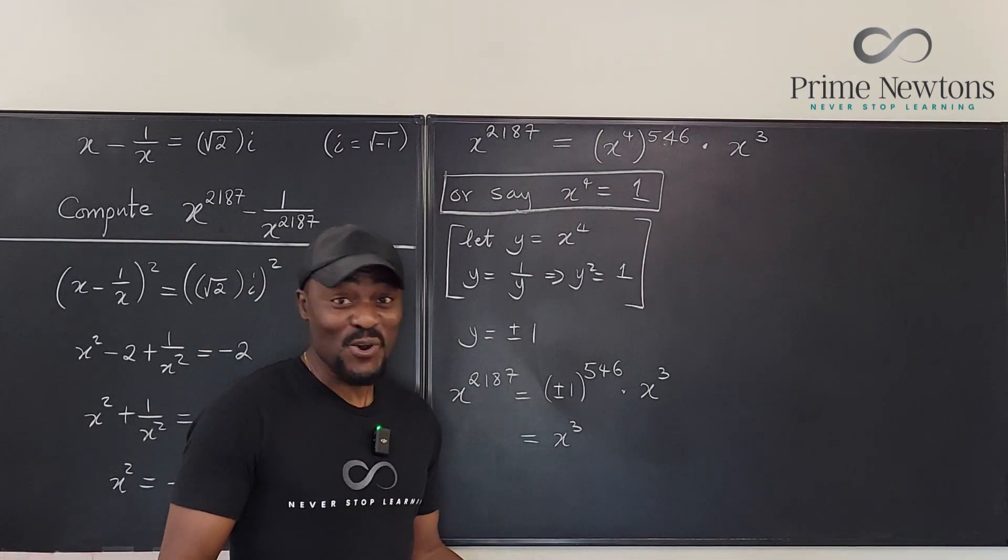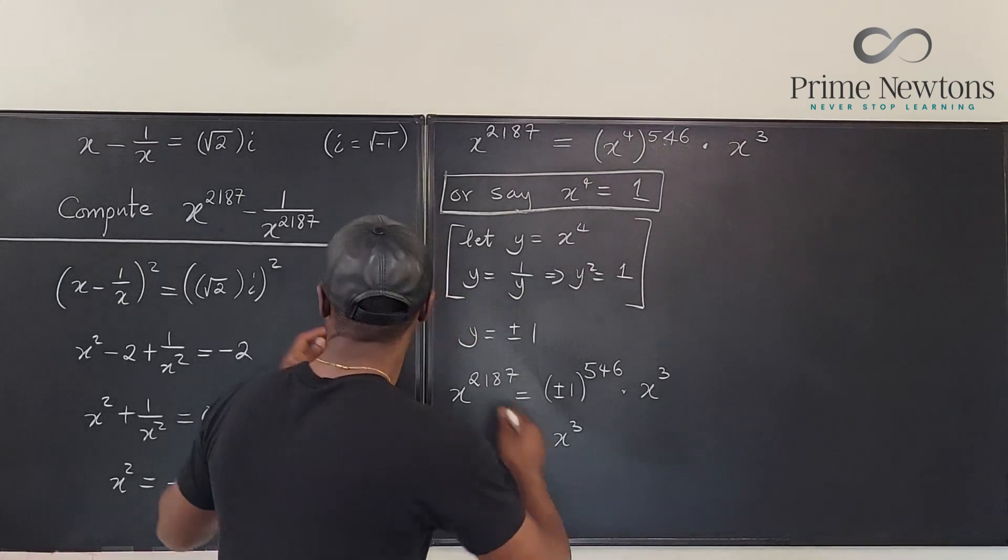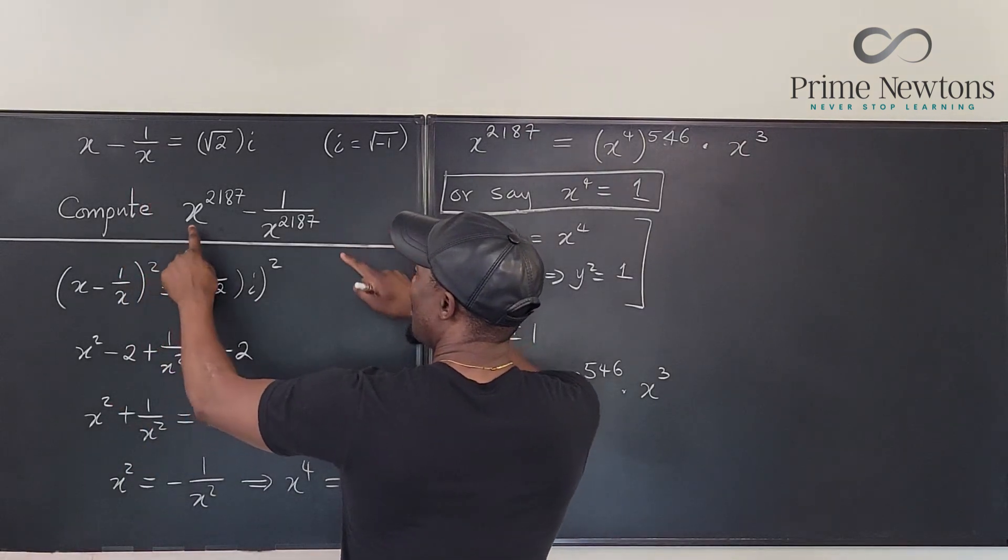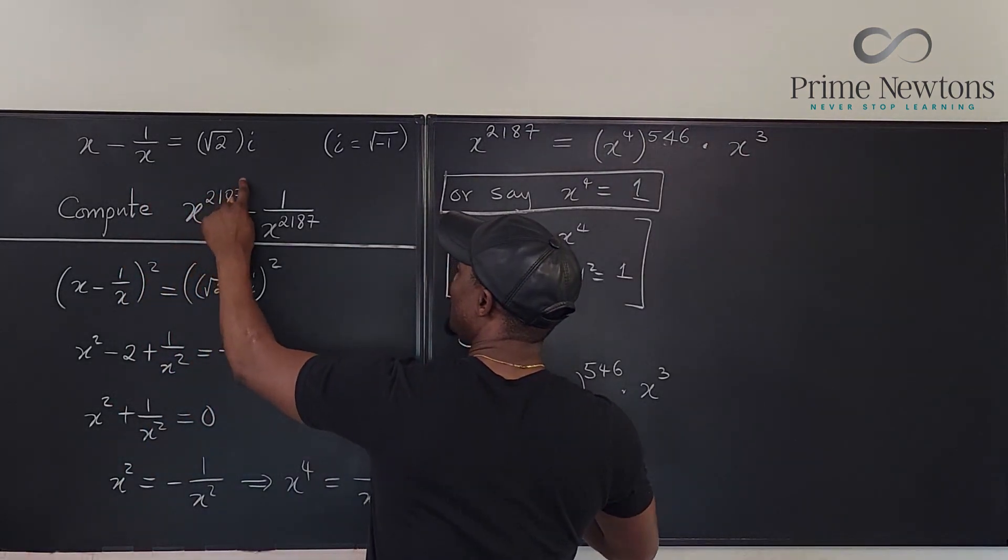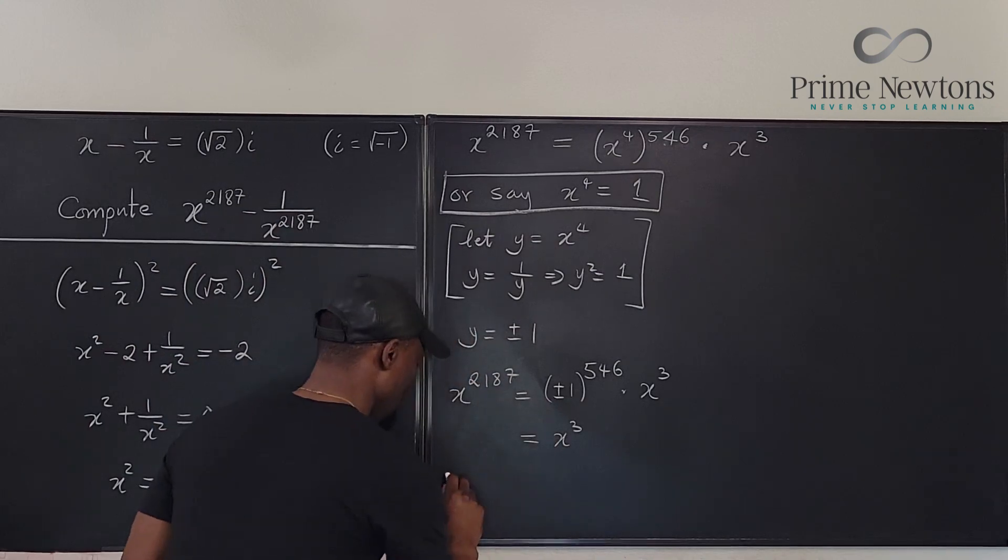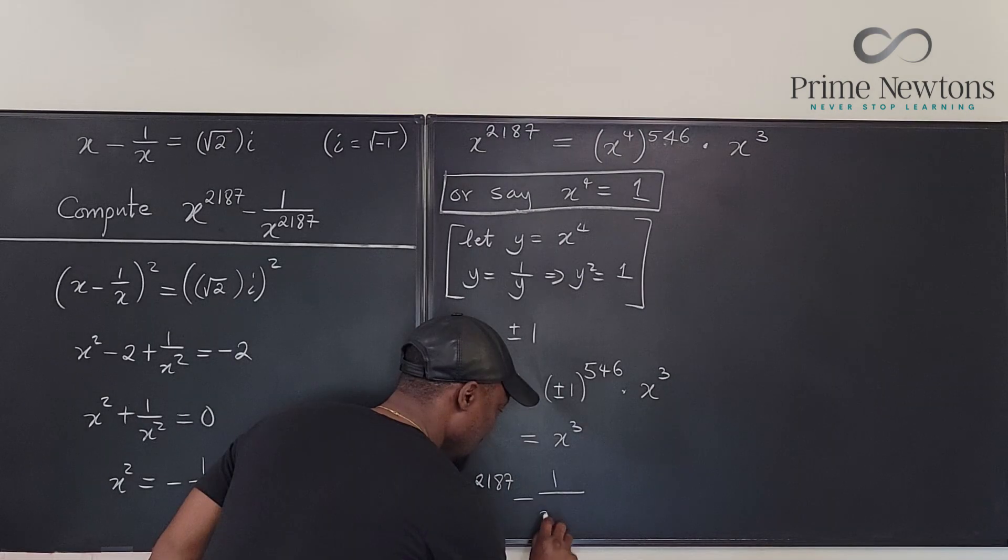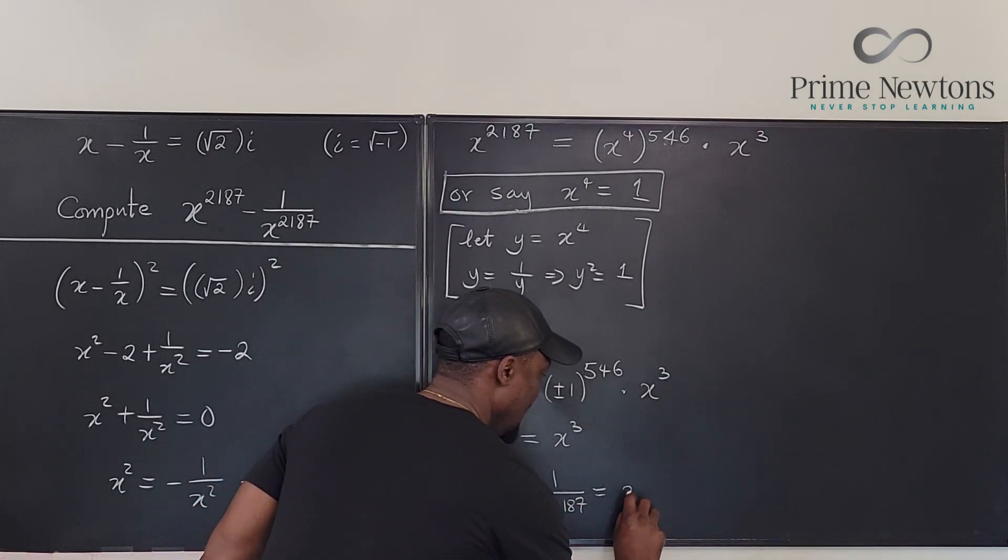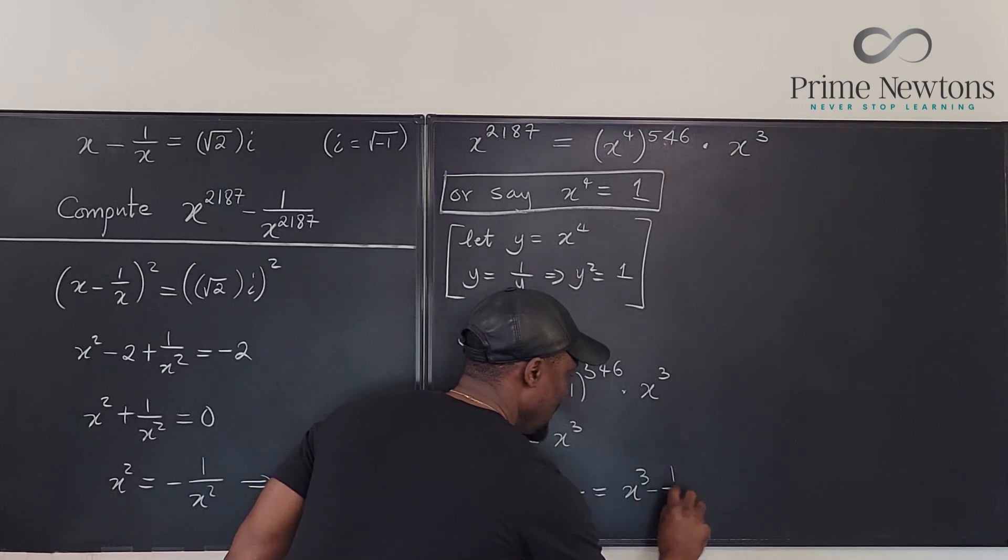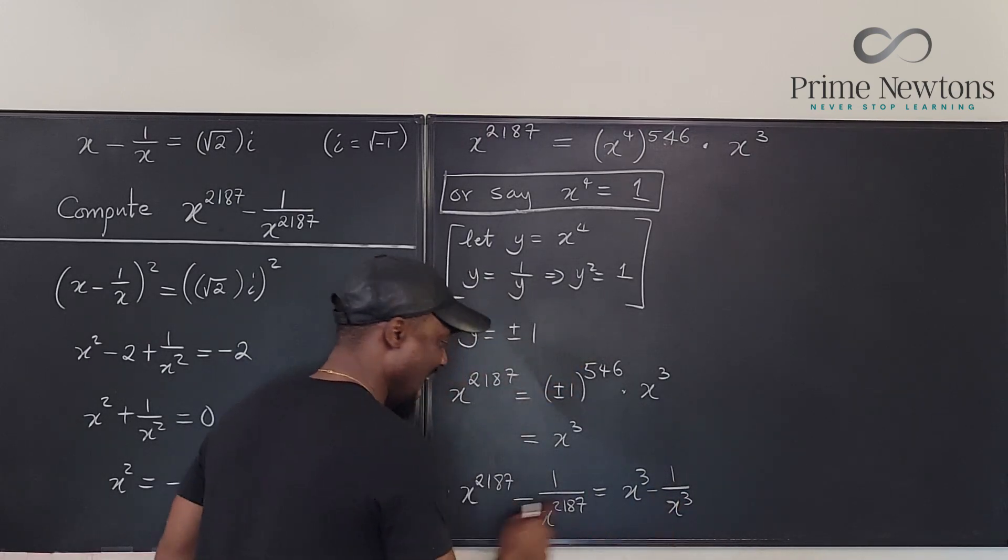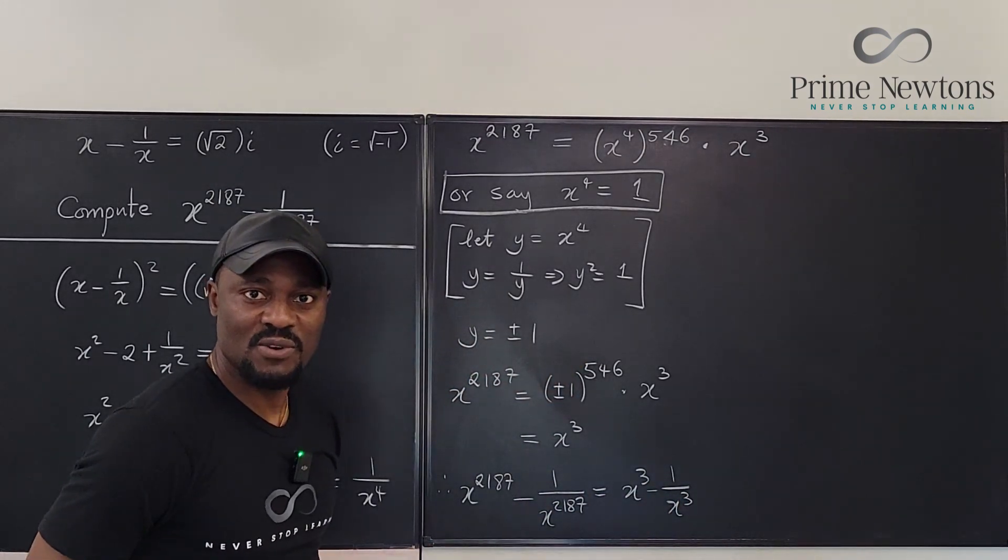So with that, we are almost at our answer because what we have here is x to the 2187 minus this. So we can say therefore x to the 2187 minus 1 over x to the 2187 is equal to x cubed minus 1 over x cubed. That is the short version of what we've got.